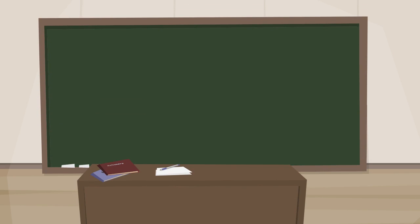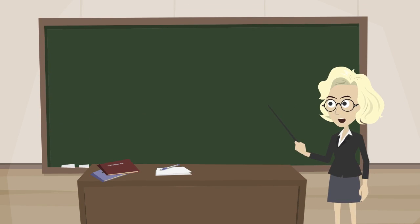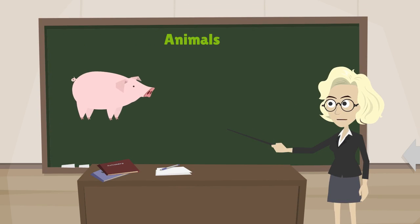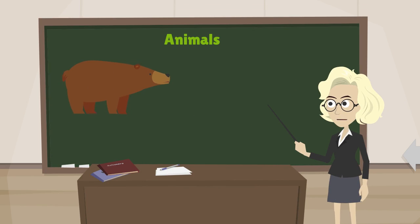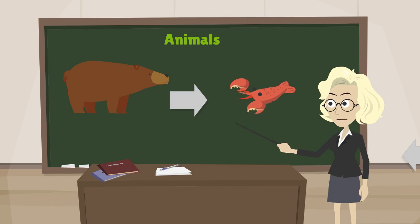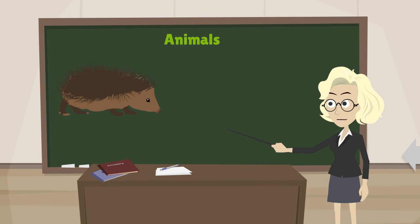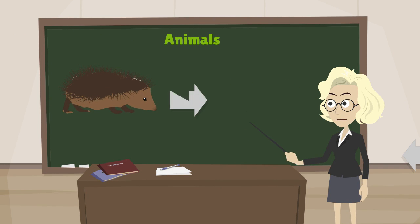So what we learned today: herbivore eats plants, carnivore eats animals, and omnivore eats both plants and animals.